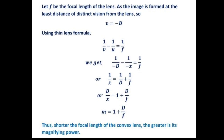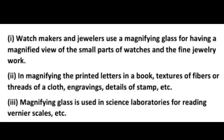We know that D/x equals the magnifying power from the previous derivation, so we replace D/x with m and get the relation m = 1 + D/f. This confirms that shorter the focal length of the convex lens, greater is its magnifying power.